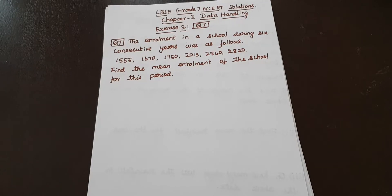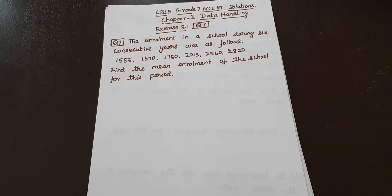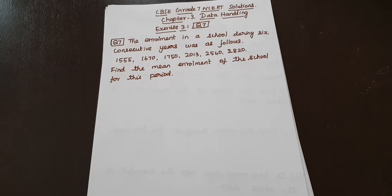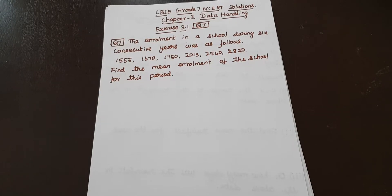The enrollment in a school during 6 consecutive years was as follows: 1000, 1555, 1670, 1750, 2013, 2540, and 2820. Find the mean enrollment of the school for this period.